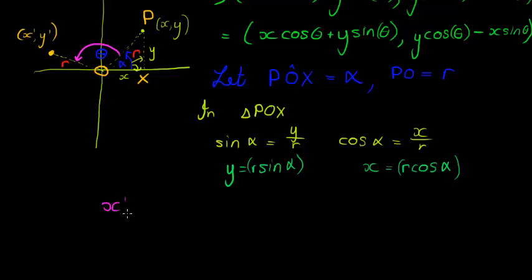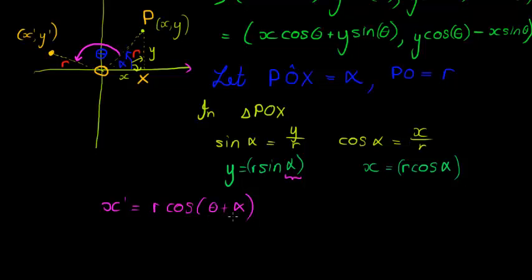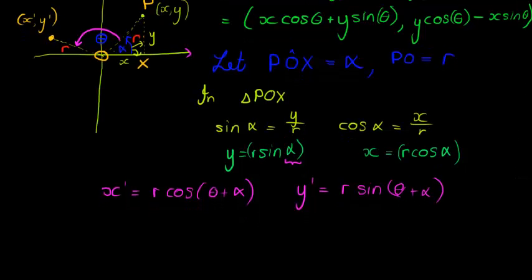Now, how about the image? Alpha is simply the angle the original point makes with the positive X-axis. The image point makes an angle of theta plus alpha with the positive X-axis. So the x-coordinate of the image is R cos(theta + alpha), and the y-coordinate of the image is R sin(theta + alpha).